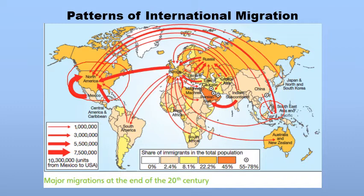The Middle East is another focus of attention. Because of the discovery of oil, there was job creation and more work opportunities. People particularly from the subcontinent — India, Pakistan, and Bangladesh — migrated to the Middle East, specifically to Saudi Arabia, Kuwait, Qatar, Bahrain, UAE, and Oman. These are countries that received a huge number of migrants from the subcontinent.